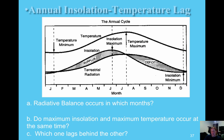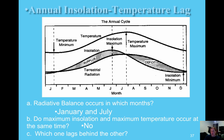Radiative balance during the year occurs in January and July. Our hottest month is July and our coldest temperatures are in January. The most cooling hits right after the winter solstice on December 21st, reaching its minimum in January, and our warmest month tends to be the end of July. Maximum insolation and maximum temperature do not occur at the same time because it takes the Earth some time to heat up — temperature always lags behind maximum insolation.